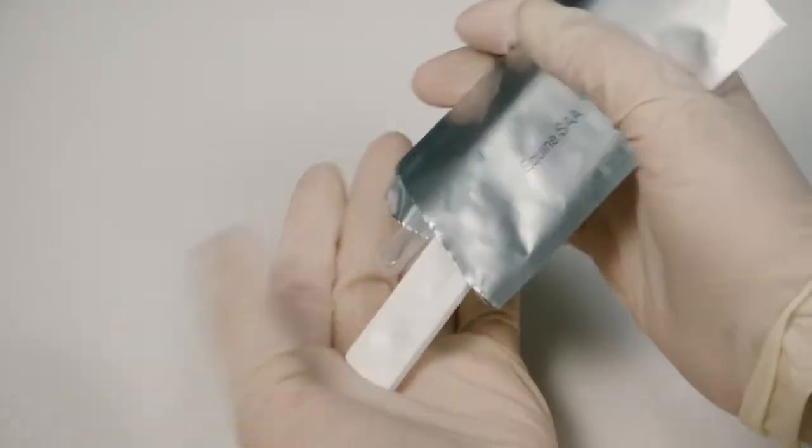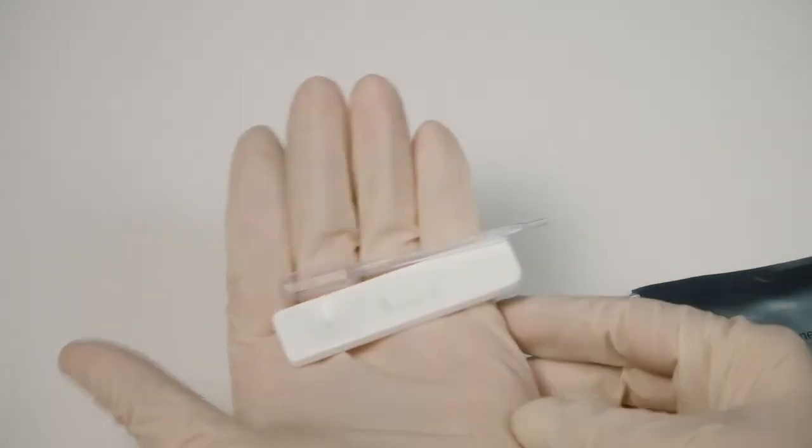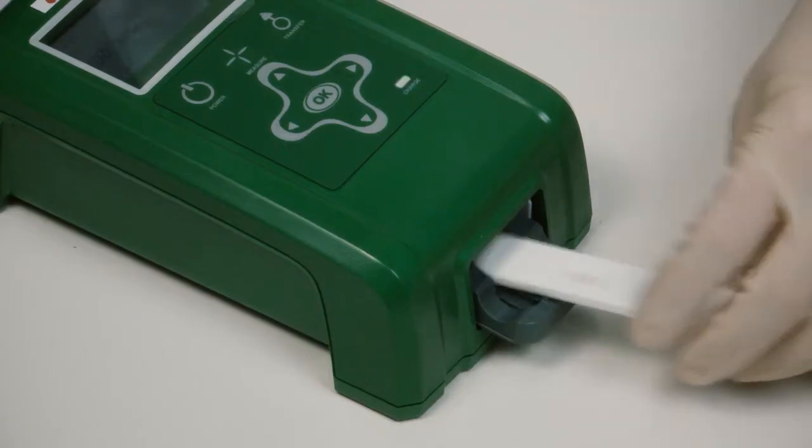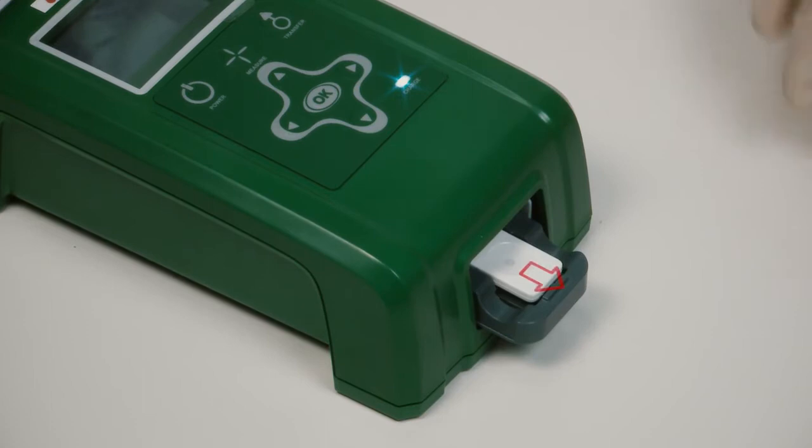Open the test pouch and insert the test device into the reader. The small arrow at the end of the test should point towards you. The sample well marked with S should remain outside the reader.